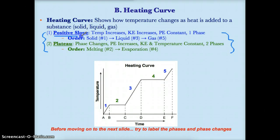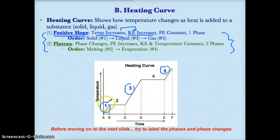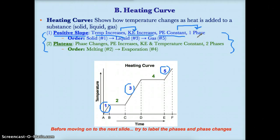In a heating curve, you see positive slopes at sections one, three, and five — they're pointing upwards. During these times, the temperature of the y-axis is increasing, so the kinetic energy increases as well, because kinetic energy is related to temperature. These three sections are each only one phase, so since there's only one phase, the potential energy is constant because the phase is not changing.